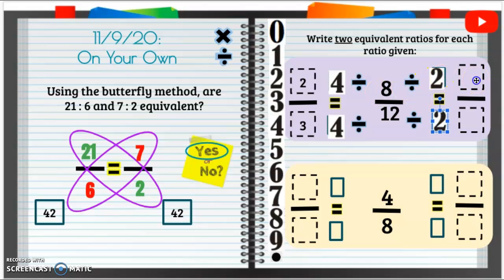So if I do 8 divided by 2, I know that's 4, and then 12 divided by 2, I know that's 6. So 4 sixths is also an equivalent ratio to 8 twelfths, which is also equivalent to 2 thirds. So all three of these fractions or ratios here are equal. They're equivalent, they're the same.